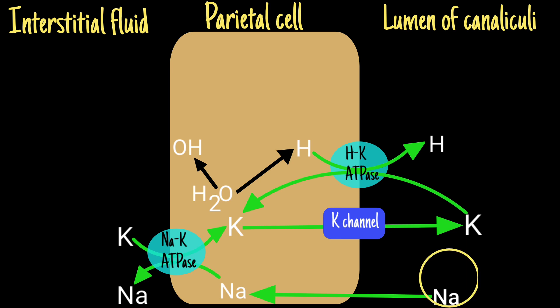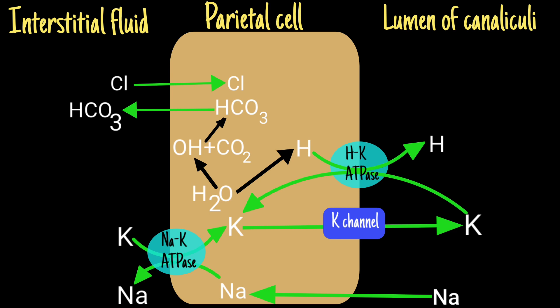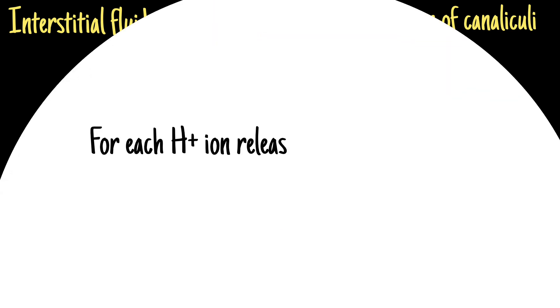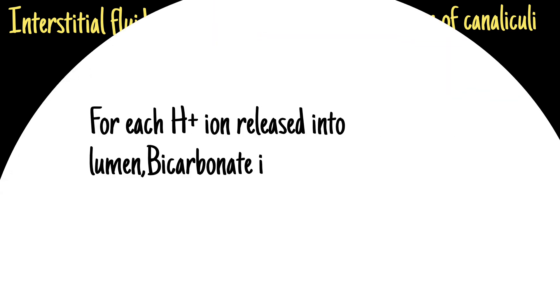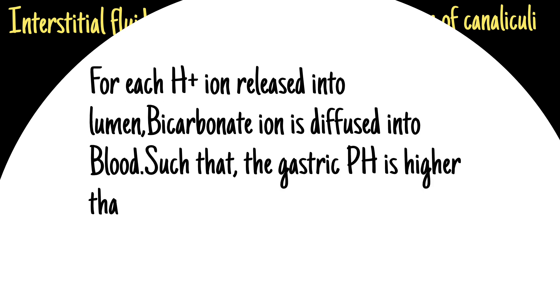For each Na+ reabsorbed into the cell cytoplasm, H+ ions take their place in the lumen and thus maintain the electrical gradient. Hydroxyl ions from water dissociation combine with carbon dioxide in the cell to form bicarbonate ions, which are exchanged for chloride ions through the bicarbonate-chloride exchanger at the basolateral side of the parietal cell. For each H+ ion released into the lumen, a bicarbonate ion is diffused into the blood, such that the gastric venous blood has a higher pH.